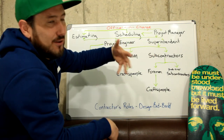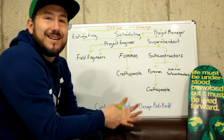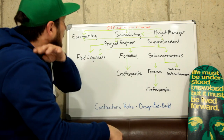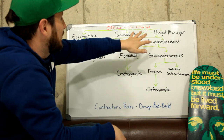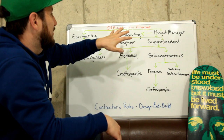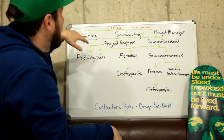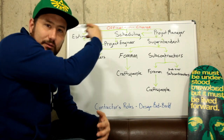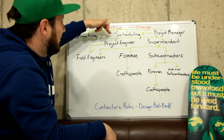A lot of times the theme is to have your estimators be the project managers of the projects they estimate, because they already have an intimate relationship with the people involved and the project itself. Scheduling is related to the officer in charge, the project manager, and scheduling. Estimating and scheduling do go hand in hand, because you need to know — on a scheduling basis — you can get your schedule days off of the takeoffs from the estimating. So a lot of stuff is automatically generated for scheduling.